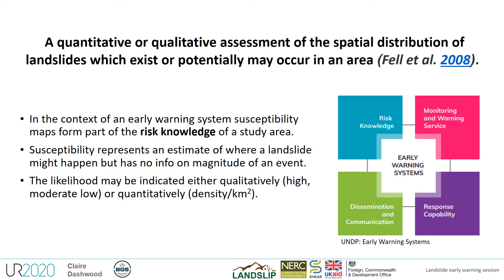In a regional landslide early warning system, the rainfall threshold will help constrain when a landslide will occur, whilst a susceptibility map will highlight areas where failures are more likely. However, they give no indication of magnitude of landslide.